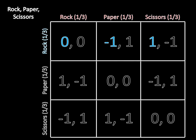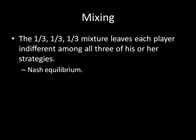It's the same for player one playing paper: getting one with probability one-third, zero with probability one-third, and negative one with probability one-third — those all cancel out, giving zero. And if player one plays scissors, they get negative one with probability one-third, one with probability one-third, and zero with probability one-third — again canceling to zero. So the one-third, one-third, one-third mixture leaves each player indifferent among all three strategies, confirming this mixed strategy Nash equilibrium.